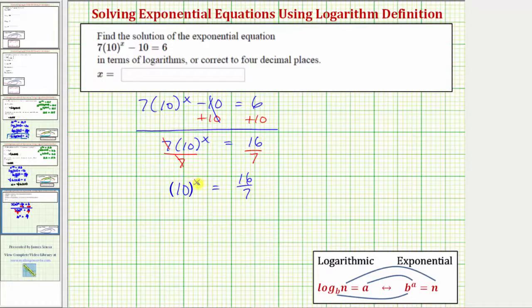And now to solve for x, we can take the common log of both sides of the equation because we have base 10 here. Or we can write this exponential equation as the equivalent log equation using the definition of a logarithm shown here below. For this example, let's use the definition of a logarithm to solve for x.